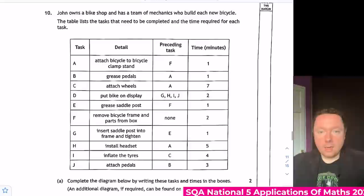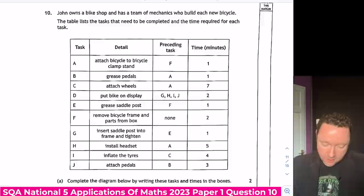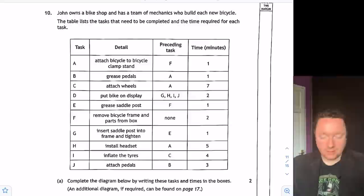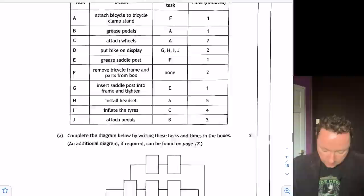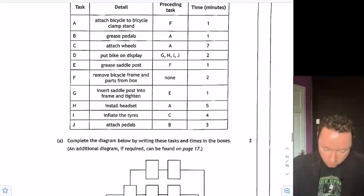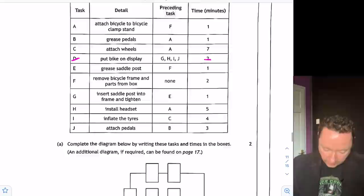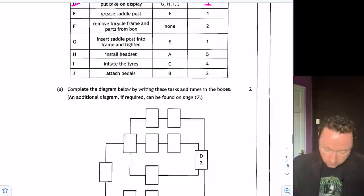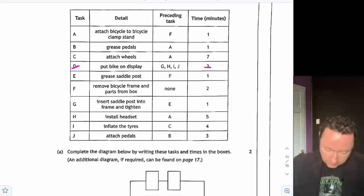National 5 Applications of Maths 2023 Paper 1 Question 10. John owns a bike shop and has a team of mechanics to build each new bike. The table lists the tasks that need to be completed. So we've got a precedence table to complete. Complete the diagram below showing where I've written these tasks and the times in the boxes. So we've got the first ones, one of them is ordering them for us, D and 2. So there's our D, which is 2 minutes. And before D, we've got G, H, I and J. So G, H, I and J could go in these boxes and we can work from there. I'm going to find our first one first because it's always worked from the start. Our first task is F because it's got no preceding task and F has got a time of two minutes. So I can write F and 2 in this first box here because that's our first task.